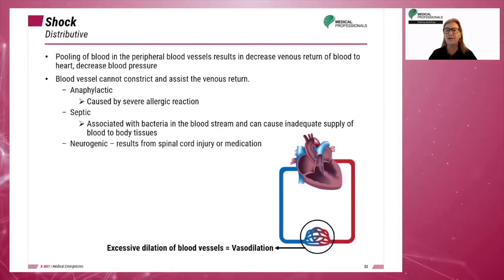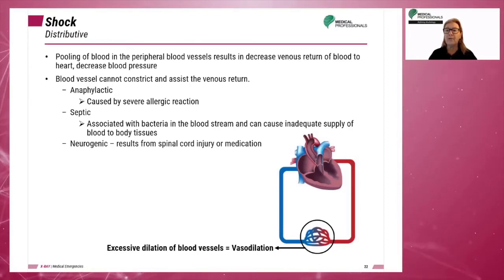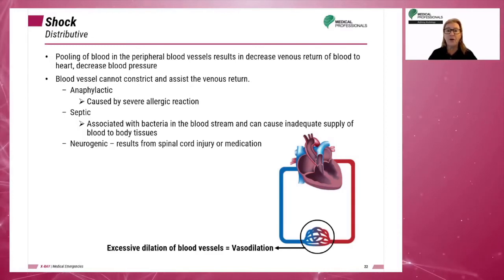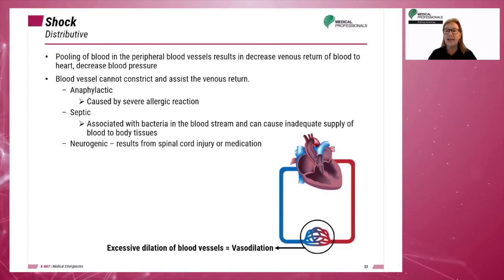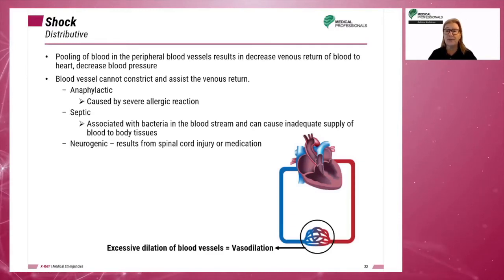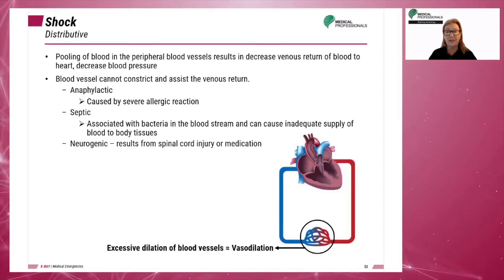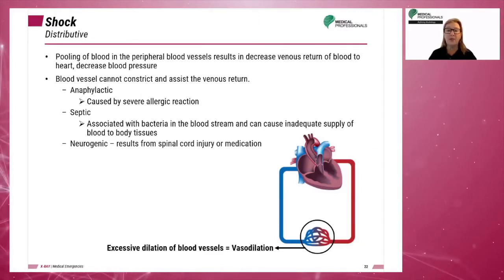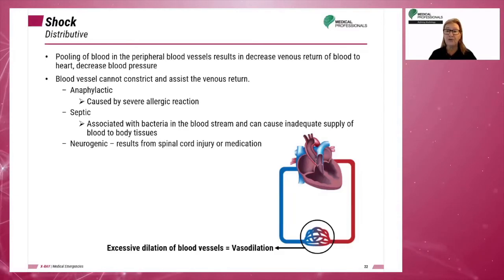Shock can also be categorized as distributive. In distributive shock, there is a pooling of blood in the peripheral blood vessels, resulting in decreased venous return of blood to the heart and a decrease in blood pressure because the blood vessels cannot constrict and assist the venous return. The three types of distributive shock are: anaphylactic shock caused by severe allergic reaction, septic shock associated with bacteria in the bloodstream, and neurogenic shock as a result of a spinal cord injury or medication.